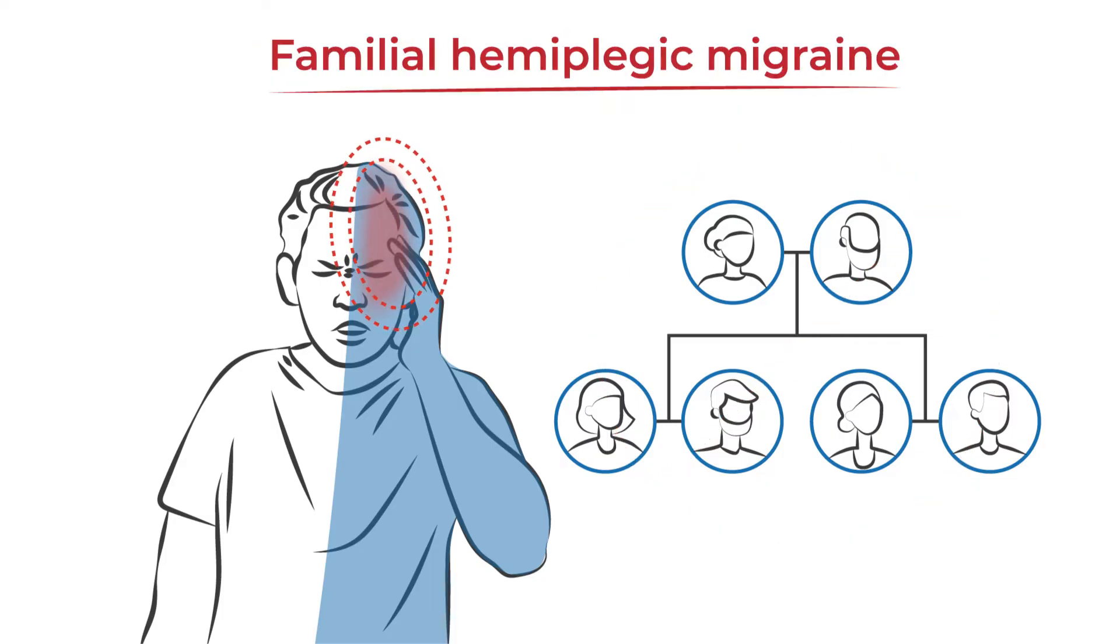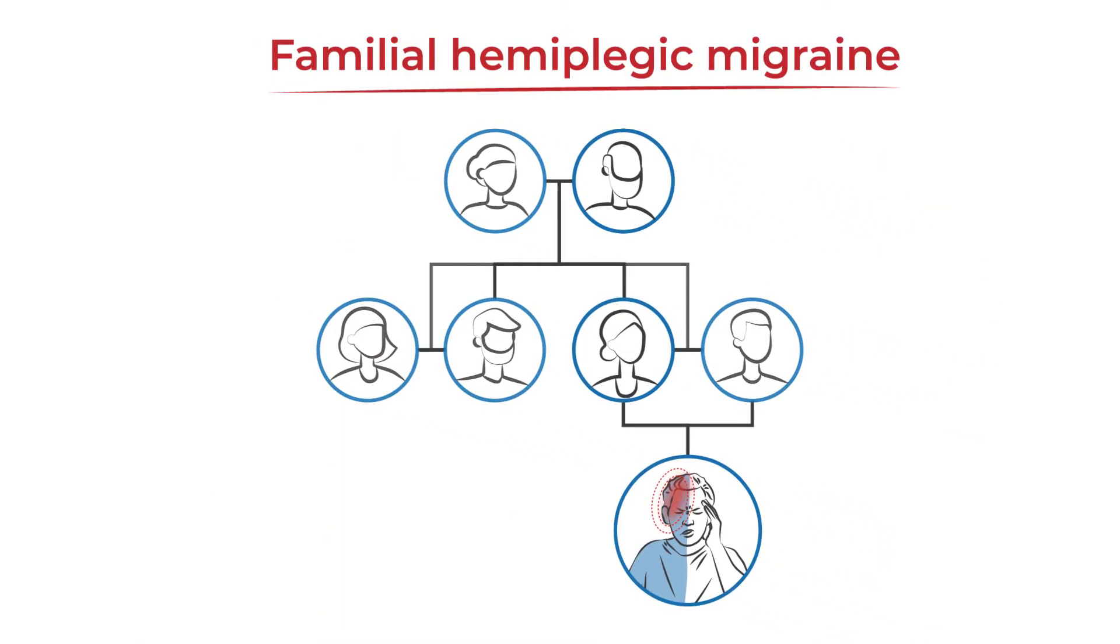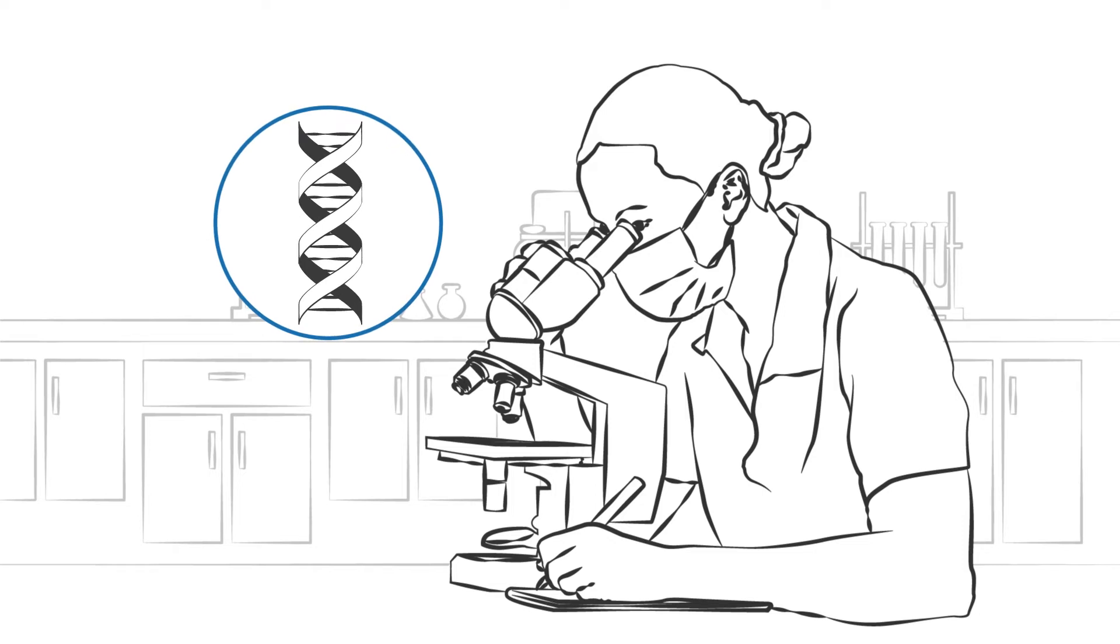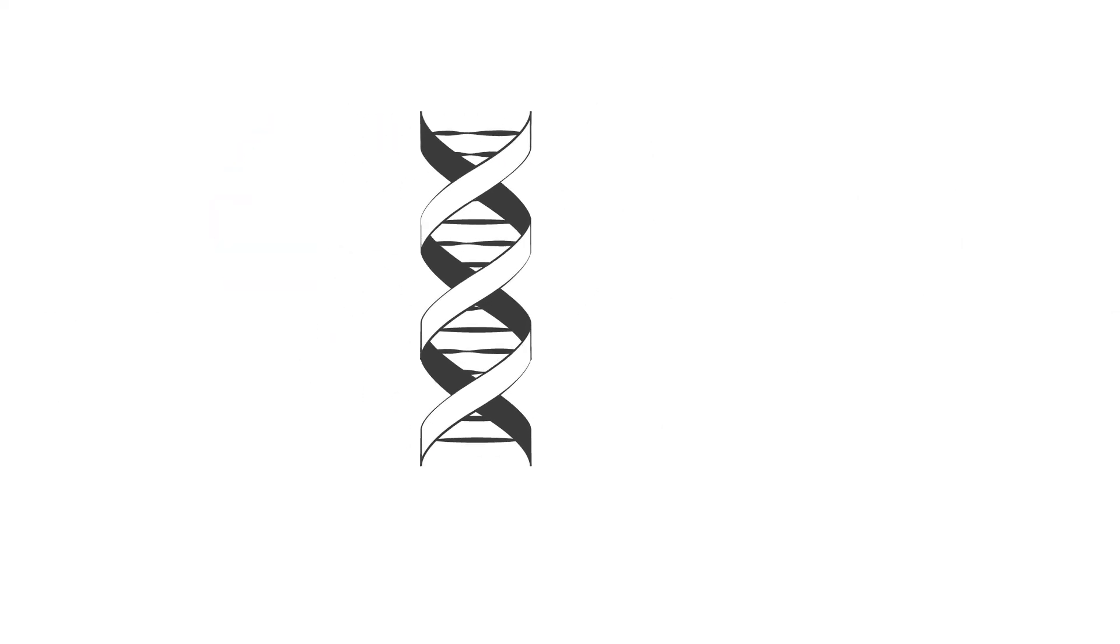The second is known as familial hemiplegic migraine, where one or more first-degree relatives also have this condition. So far, scientists have found abnormal defects in four genes related to familial hemiplegic migraine.